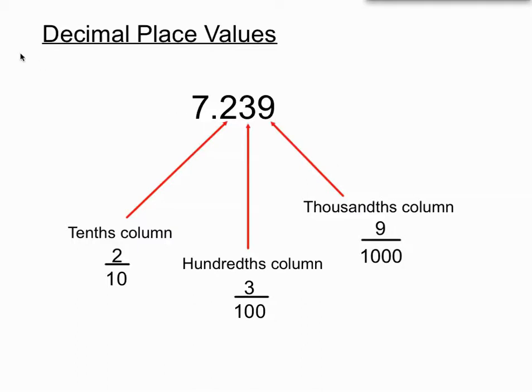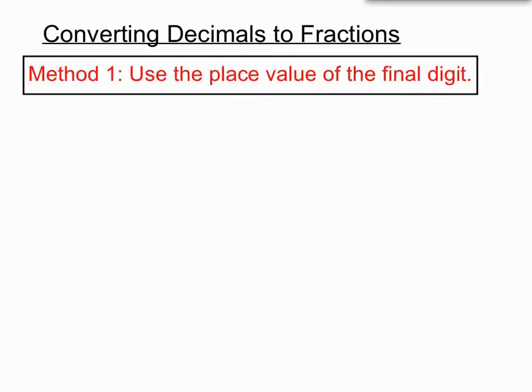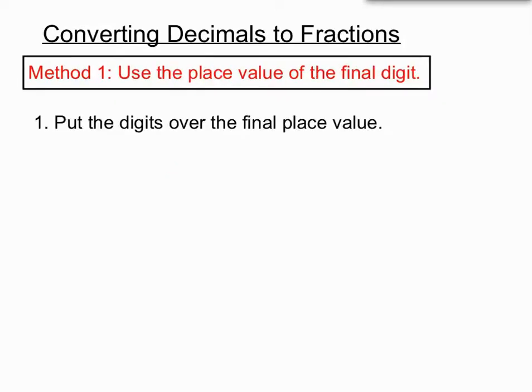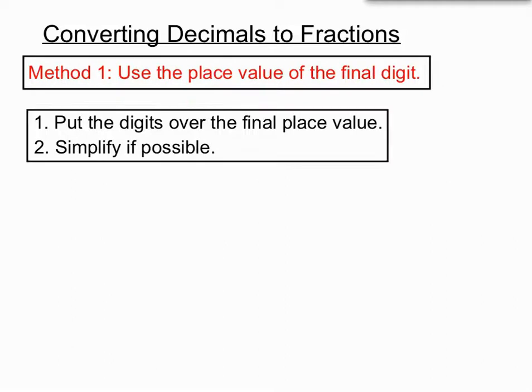We can use that knowledge to help us work out how to turn a decimal into a fraction. The method is to use the place value of that final digit. Step one: put the digits over the final place value, and then we always have to simplify if we can. Let's see an example, it might be a bit clearer.